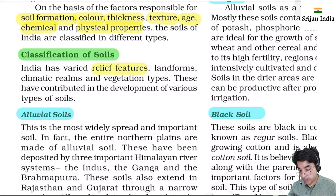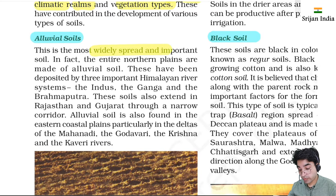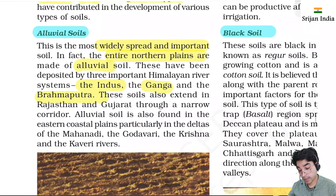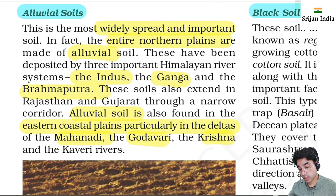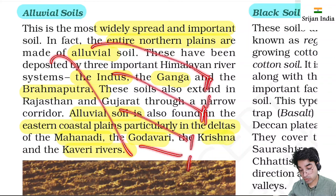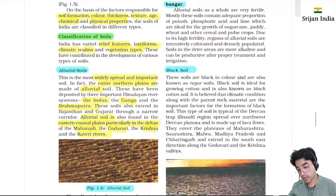One type is alluvial soil, found in the Gangetic plains - the most widely spread and important soil. Found in the northern plains formed by the three important Himalayan river systems: Indus, Ganga, and Brahmaputra. Also a narrow corridor in Rajasthan and Gujarat. In the eastern coastal plains particularly in the deltas of Mahanadi, Godavari, Krishna, and Cauvery rivers, silt deposits form alluvial soil. The composition includes sand, silt, and clay in varying proportions. Moving inland from river valleys, soil particles become coarser. Soils are coarser in upper reaches of valleys near slopes; near piedmont plains like the Duars, Chos, and Terai, soil particles are found.